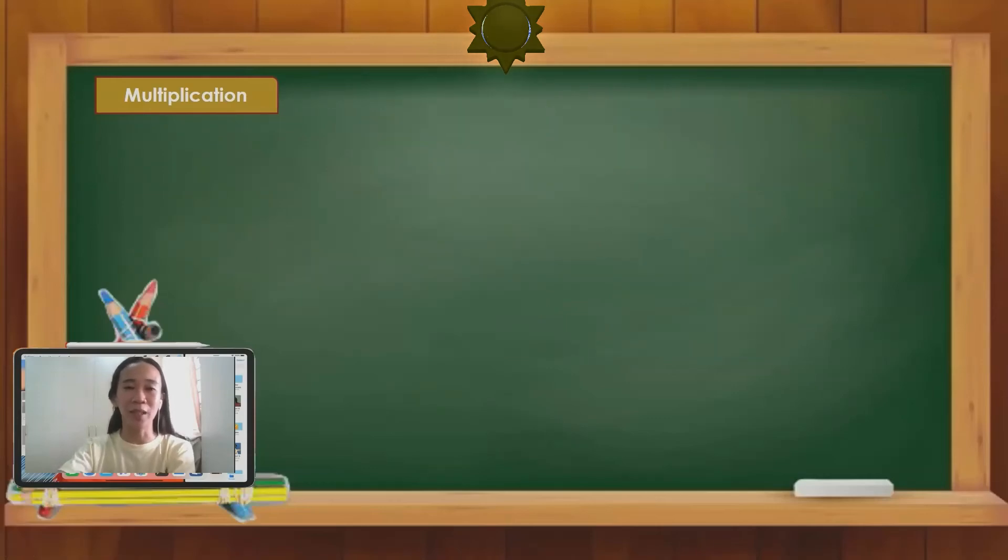Let us have more examples. 136 times 12. What's your answer here, Gwadans? If your answer is 1,632, you are very brilliant, Gwadans. Because the answer for 136 times 12 is 1,632. Let us check. 2 times 6 is 12. 2 carry 1. 2 times 3 is 6. Plus 1, 7. Lastly, 2 times 1 is 2.